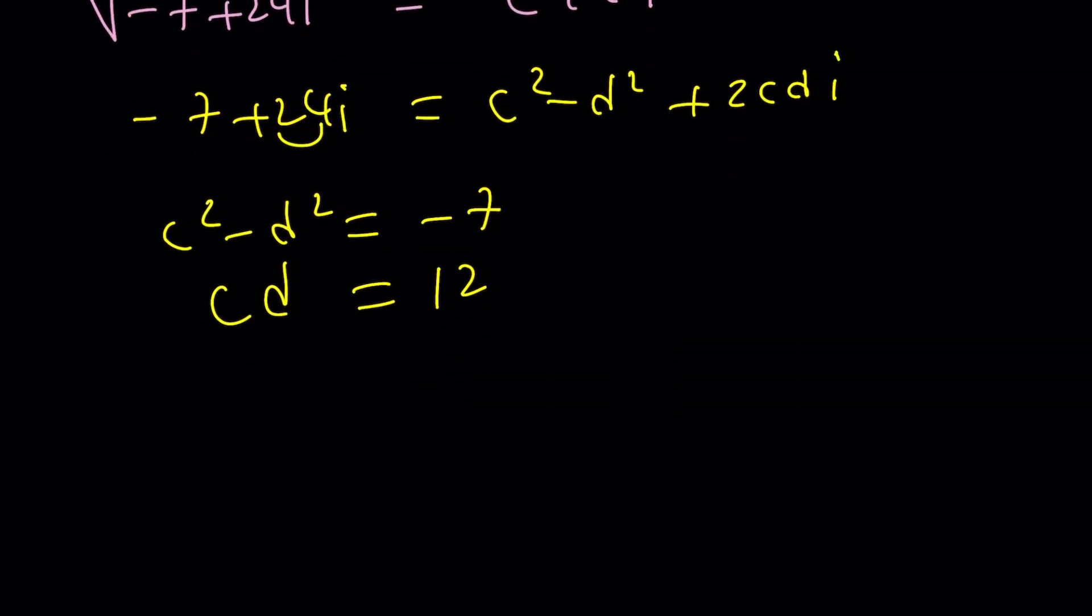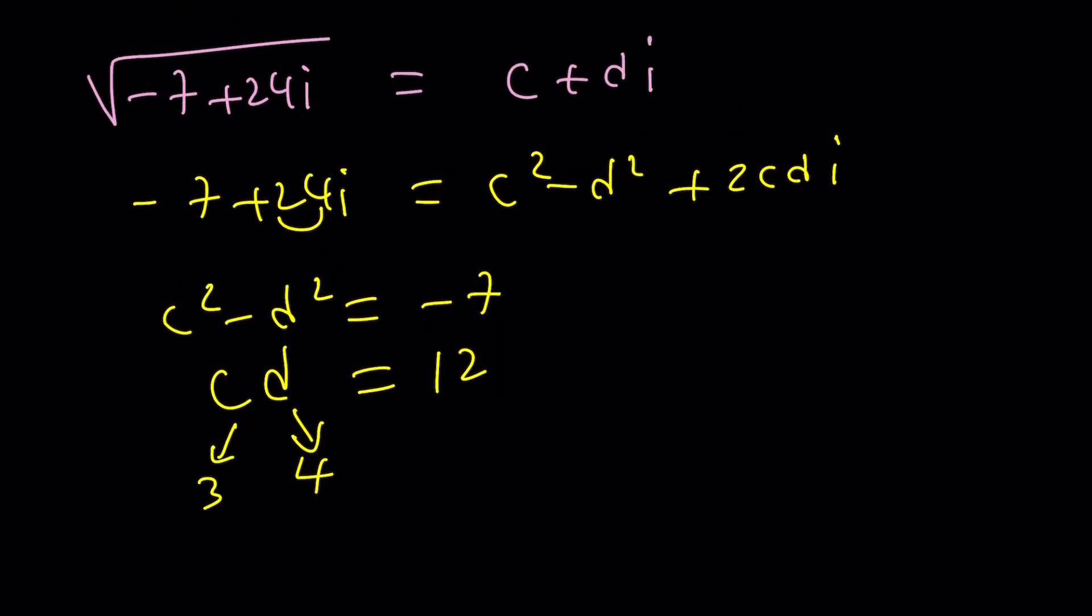you could probably guess and check. It's easy. Don't try to solve it. I mean, you can if you want. But I would just guess 1 and 12 won't work. 3 and 4 maybe. 16. But you've got to choose carefully because 3 is less than 4. So C must be 3, right? Because their difference is negative. So now this gives me 3 plus 4i as one of the square roots. Great.